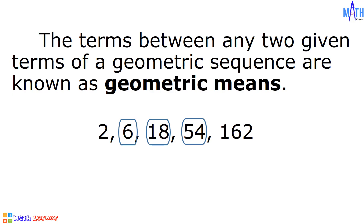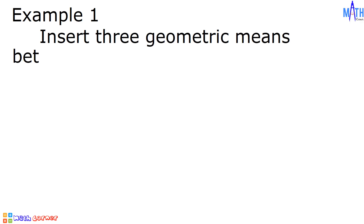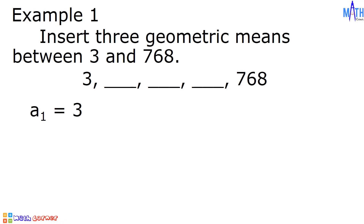To solve for geometric means, our first step is to solve for the common ratio. Example number 1: let us insert three geometric means between 3 and 768. The geometric sequence appears to be like this — there are three missing terms between 3 and 768. Let us determine all the given values: a sub 1 is equal to 3, a sub 5 is equal to 768, and the value of n is equal to 5.